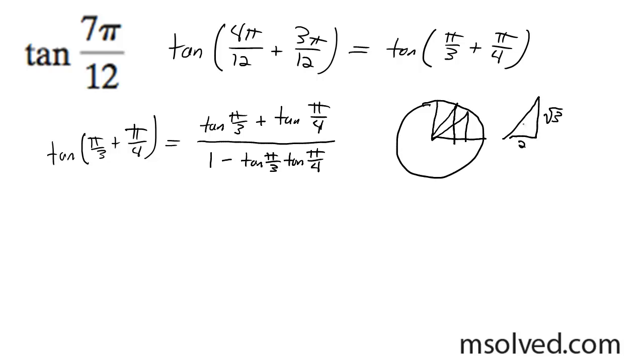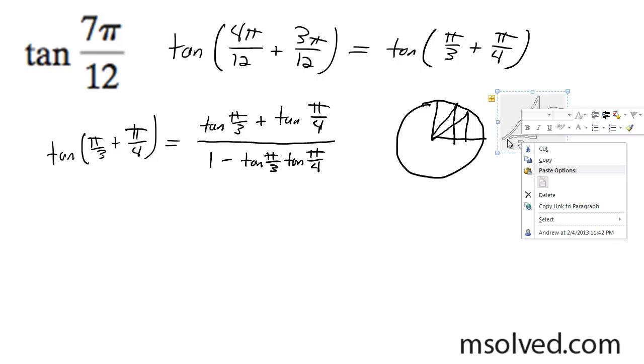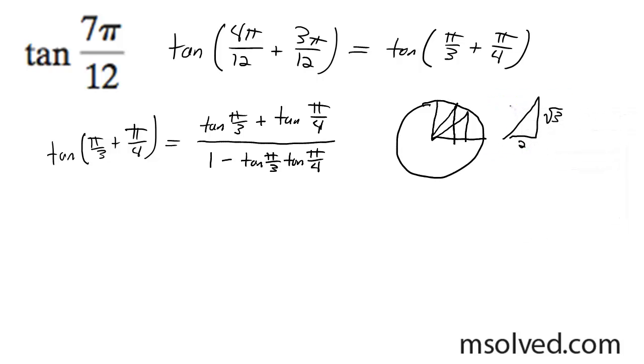For example, root 3, 2, or excuse me, 1, 2, root 3. For the 45-degree angle, I've got 1, 1, root 2.